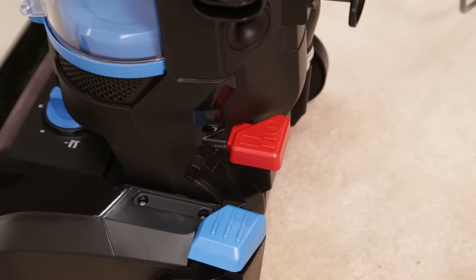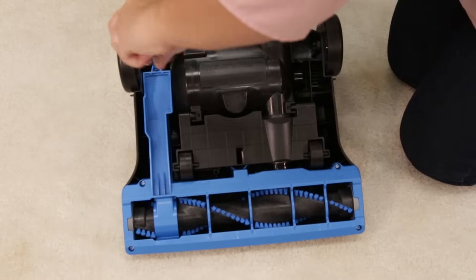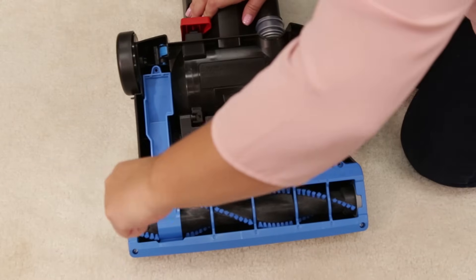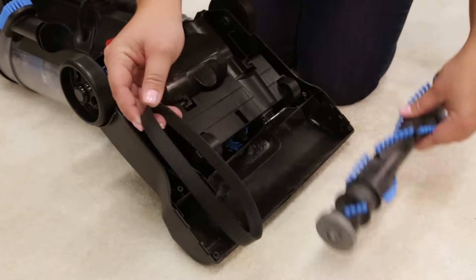To replace the brush and belt, turn the vacuum off and unplug. Turn the unit over and unscrew the five Phillips head screws to remove the bottom cover. Pull the roller straight out, threading it through the belt.